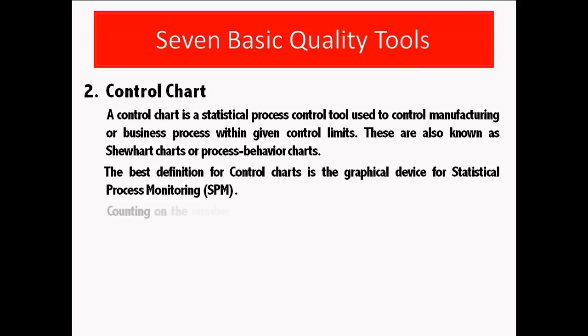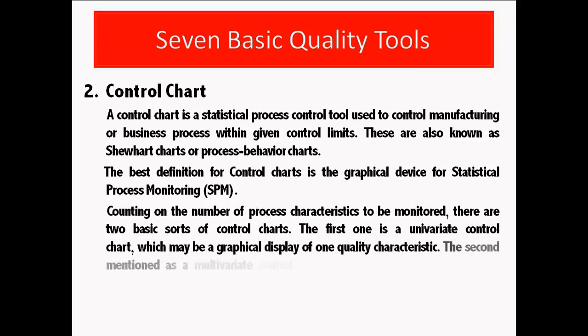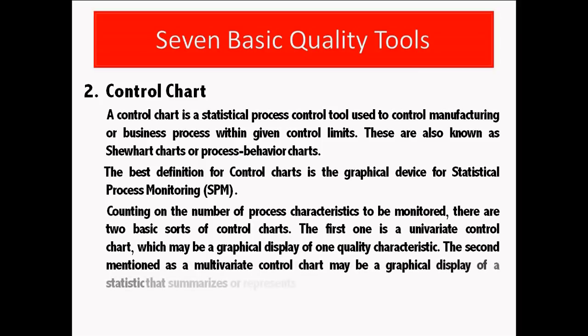Counting on a number of process characteristics to be monitored, there are two basic sorts of control charts. The first one is a univariate control chart, which may be a graphical display of one quality characteristic. The second mentioned is a multivariate control chart may be a graphical display of a statistic that summarizes or represents quite one quality characteristic.